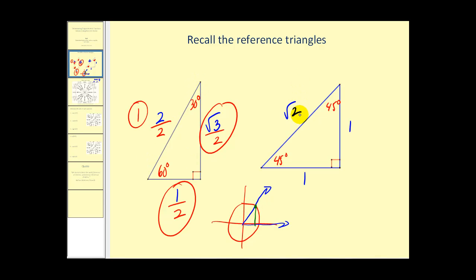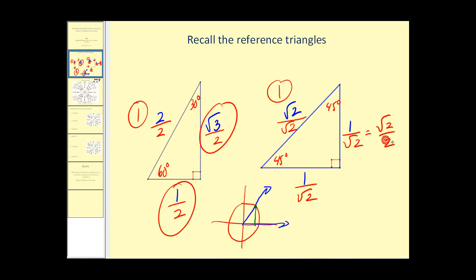On the 45-45-90 right triangle, if we want the hypotenuse to equal one, we divide by the square root of two. The hypotenuse is now equal to one, and if we rationalize, we get square root of two divided by two in both leg cases. These are the values we'll also see on the unit circle.